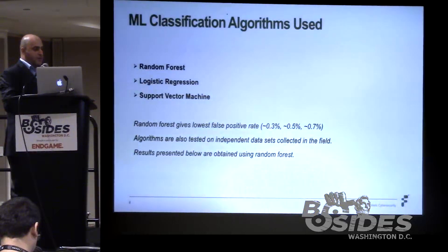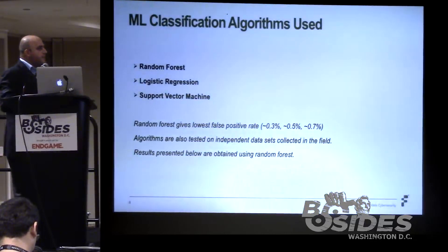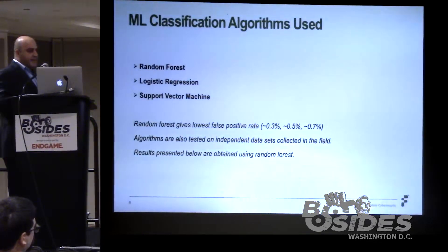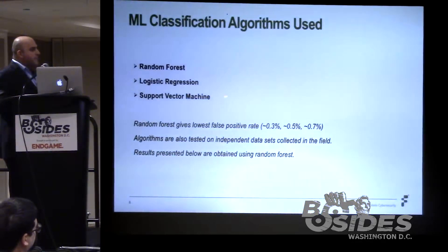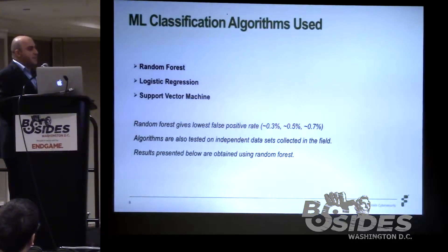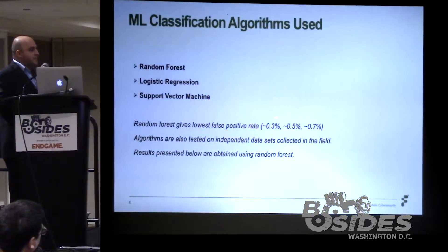The basic idea is we want to train a model using the data and an algorithm. We give it a certificate and it tells us if it's malicious or not. We use three well-known classification algorithms: random forest, logistic regression, and support vector machine. We compared accuracy — the performance we mostly care about is the false positive rate. Random forest gives us a lower false positive rate: 0.3%, compared to 0.5% for logistic regression and 0.7% for support vector machines.